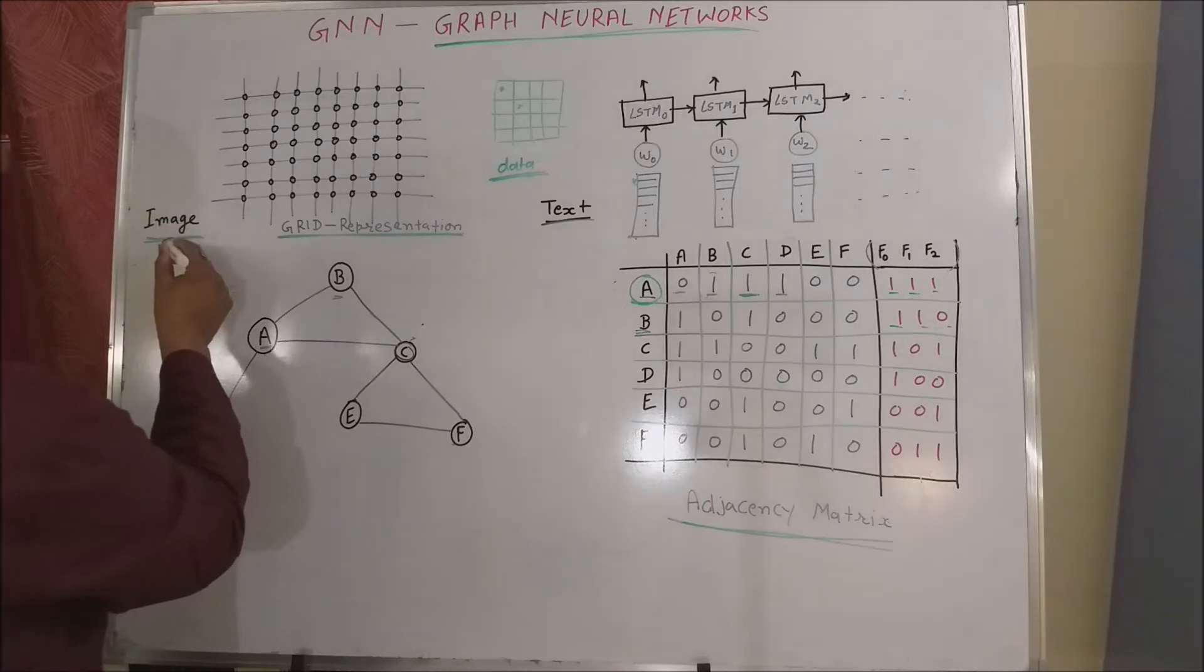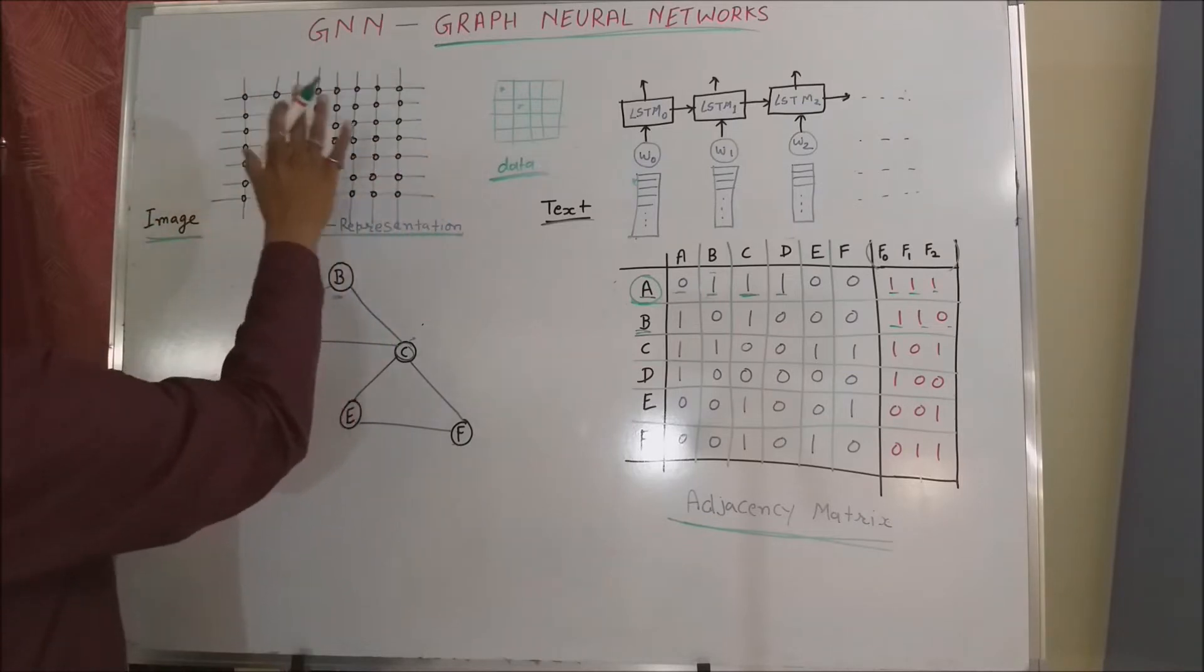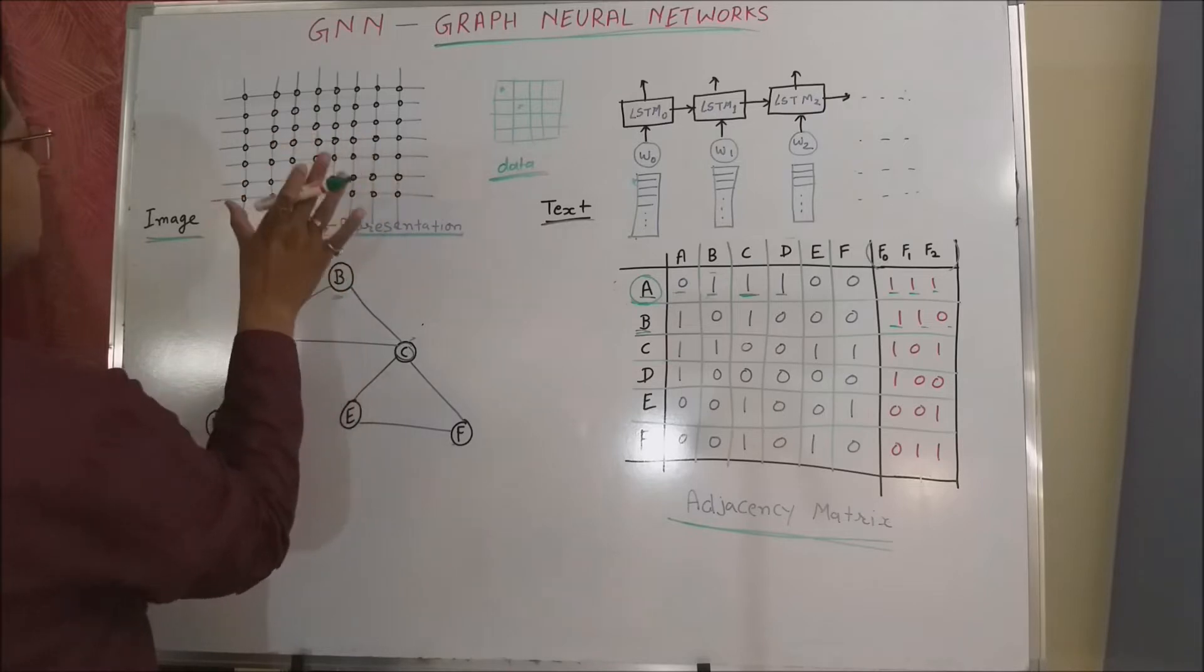Once we convert the image data, image pixel data into the grid representations, the nature of the data that you can imagine is static.